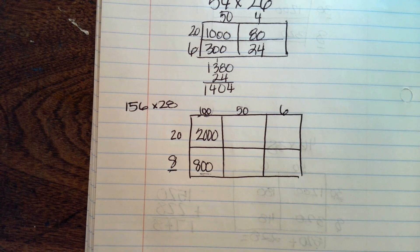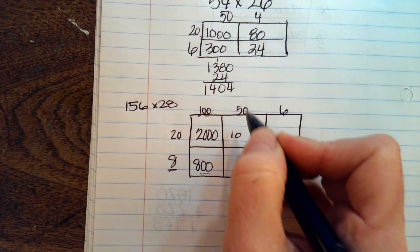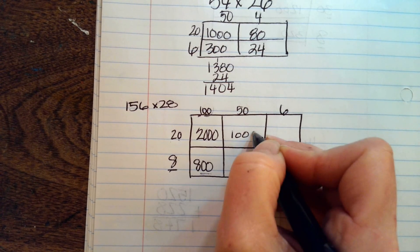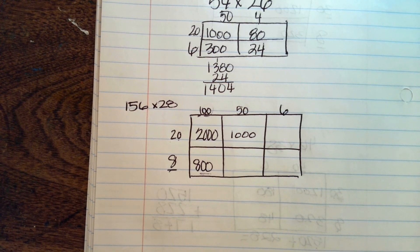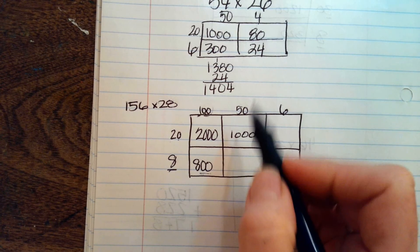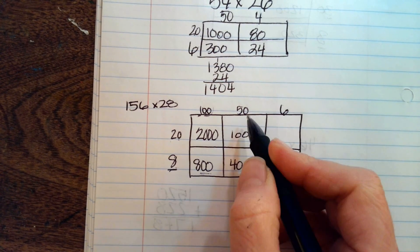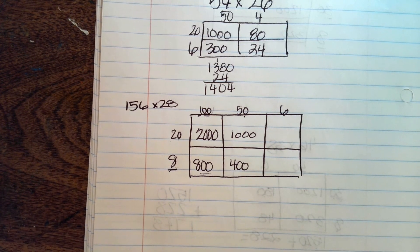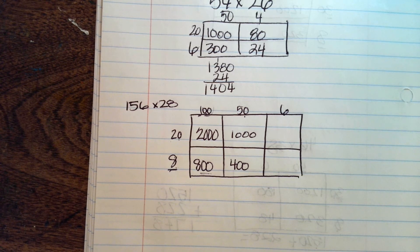Now we're going to do 5 times 2 is 10 and we haven't dealt with this zero or this zero, so what do we need to do? We need to put them in the back.